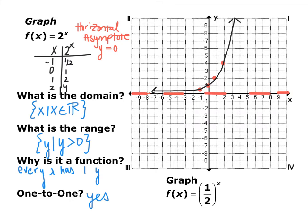So domain, you can plug anything into an exponential. You can plug in positive, negative, 0, fractions. So your domain is all real numbers. For your range, we have this horizontal asymptote here, so our range is y is greater than 0. You can't get 0 or a negative.